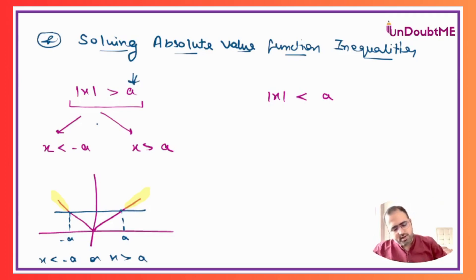Similarly, if I go with |x| less than a, then it will be clearly x lying between minus a to a. And that can be seen in the graph of y equals |x|.